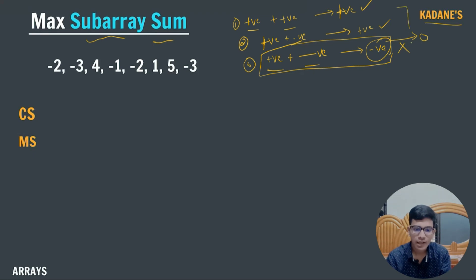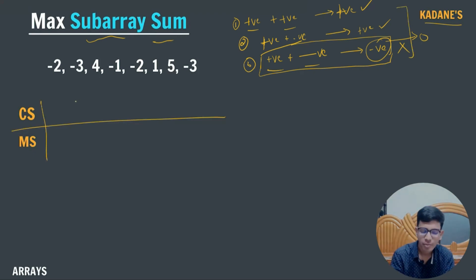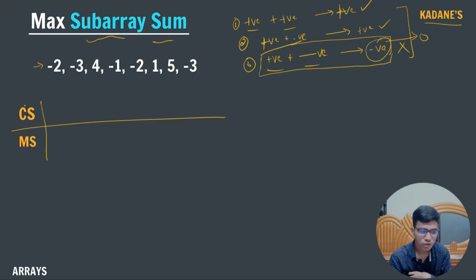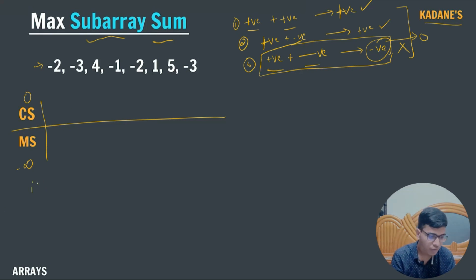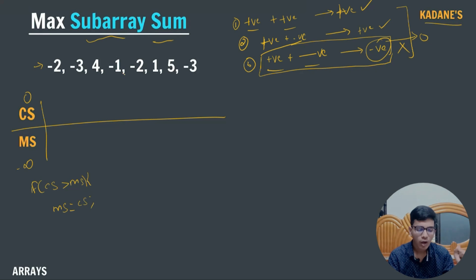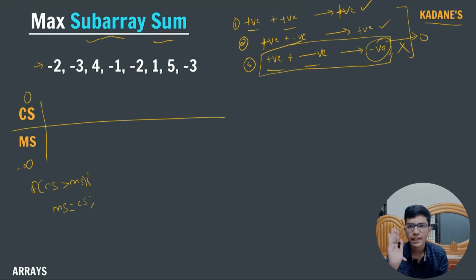Kadane identified this condition: we don't use negative numbers when calculating maximum subarray sum. So when we get a negative current sum, just replace it with 0. Don't keep the negative number; replace it by zero. This is the fundamental logic of Kadane's algorithm. Let me dry run this on the given array. The first element is -2, so current sum = -2. Replace it with 0. Maximum sum also becomes 0 since 0 > minus infinity.